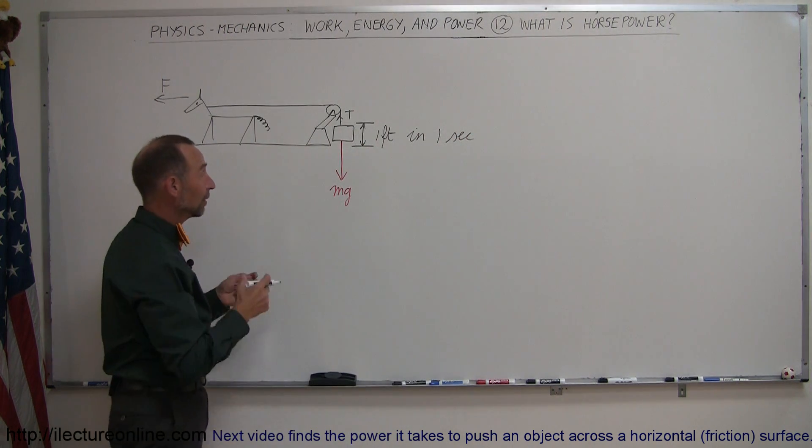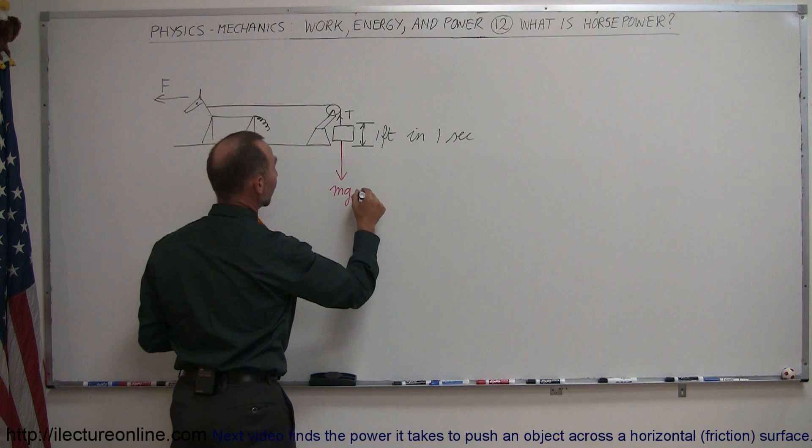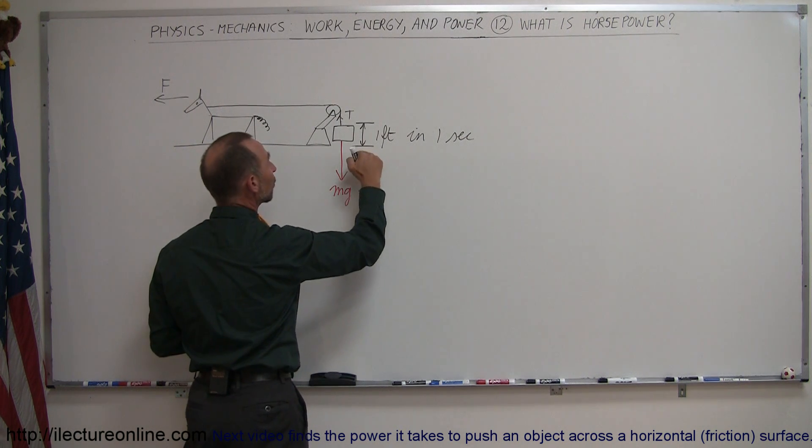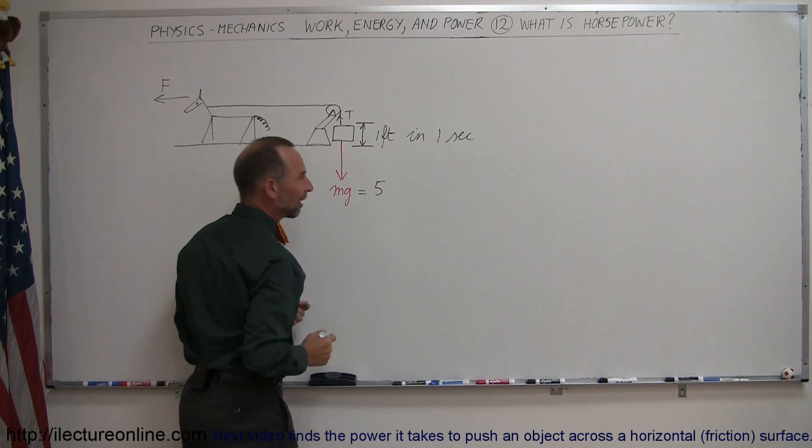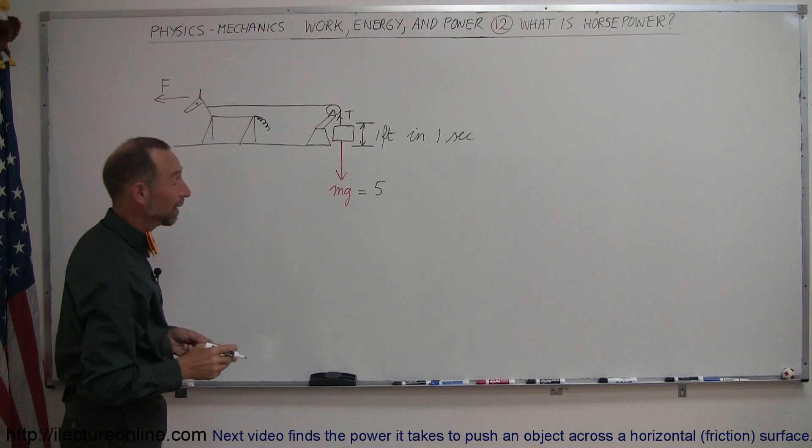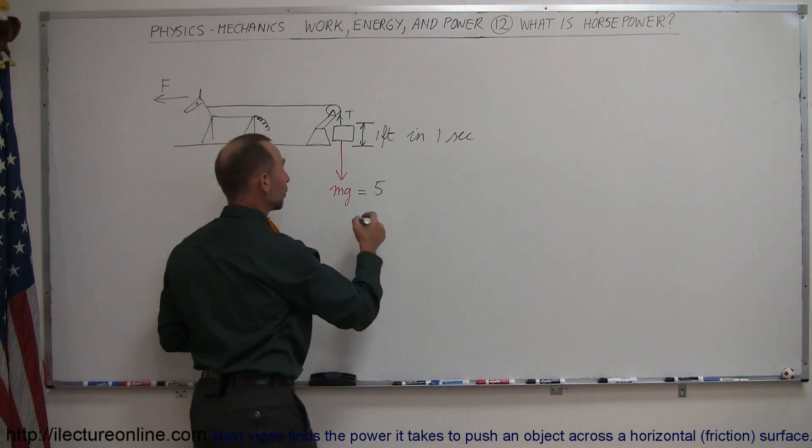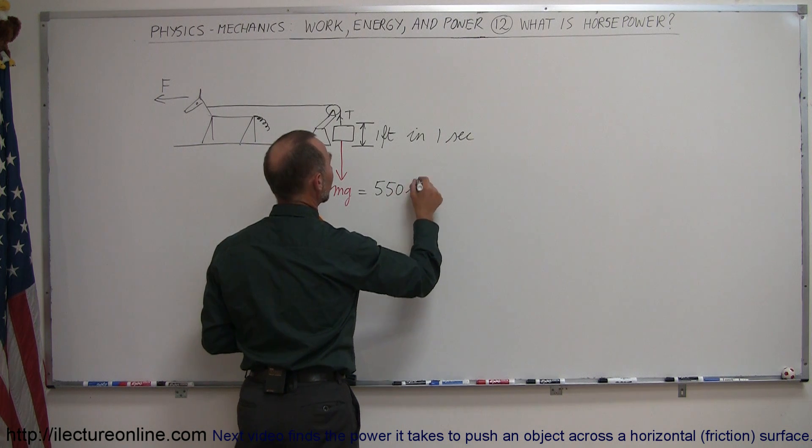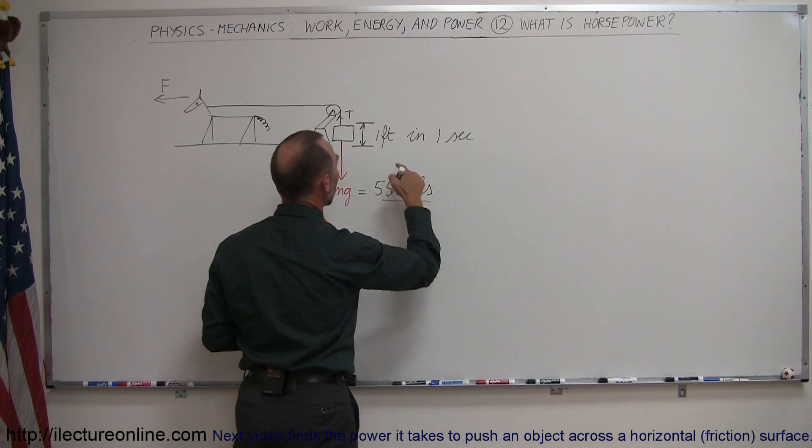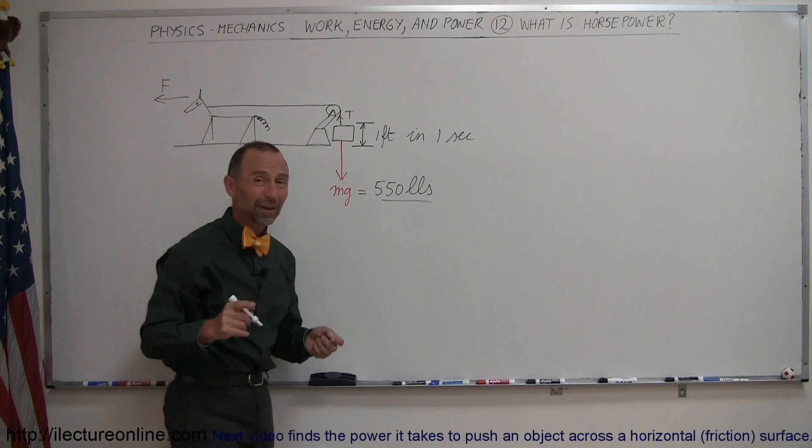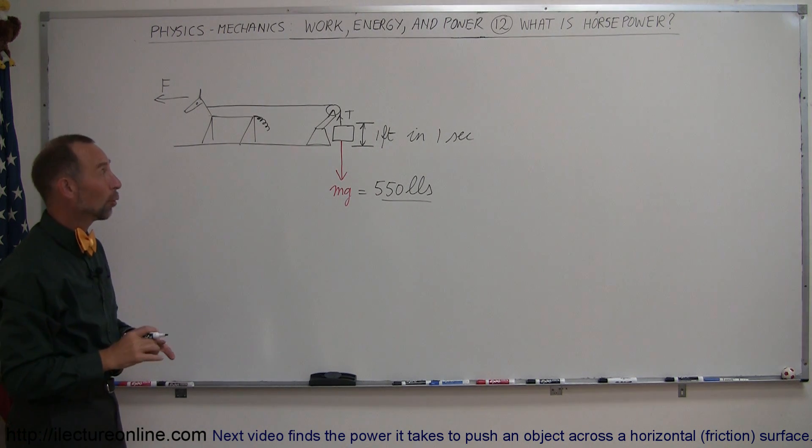And so what they then said is that they measured it afterwards and said well for that to be able to be done by a horse in one second - and of course they picked a particular horse. I don't know if they used a whole bunch of horses and averaged it out, but they took this one horse and said this horse can lift 550 pounds one foot off the ground in one second, and we'll call that a horsepower.